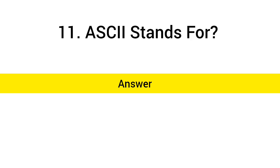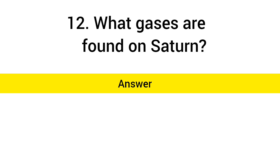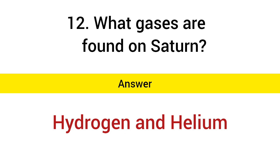ASCII stands for American Standard Code for Information Interchange. What gases are found on Saturn? Answer: Hydrogen and helium.